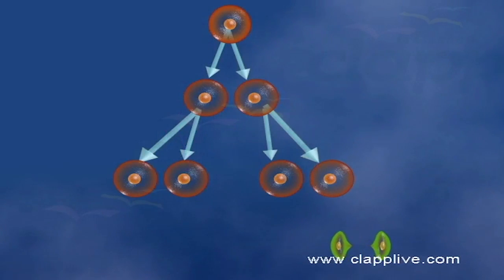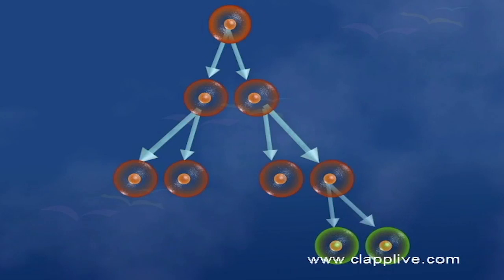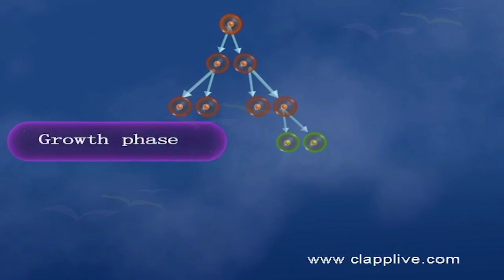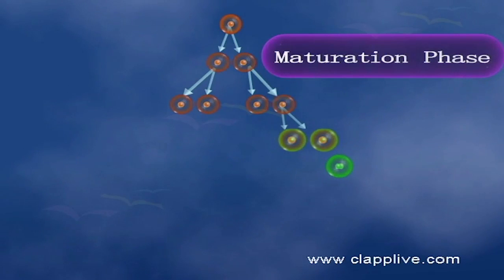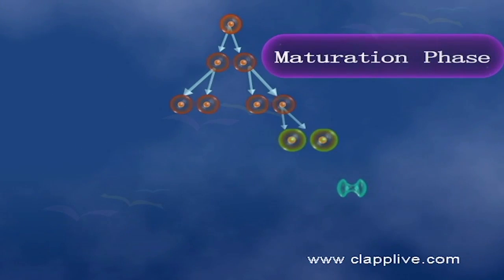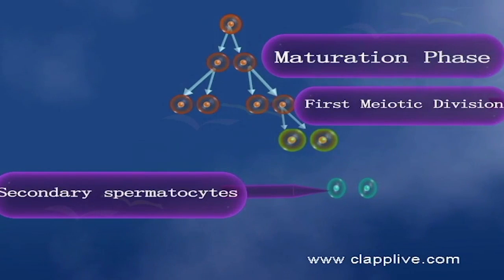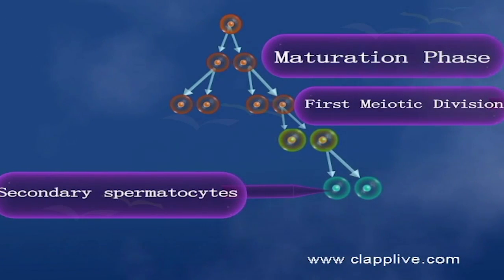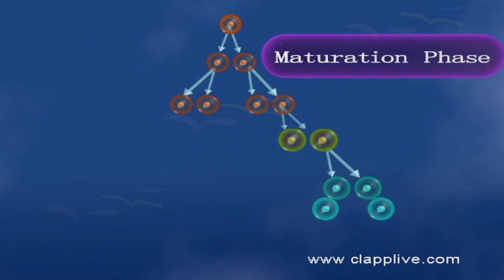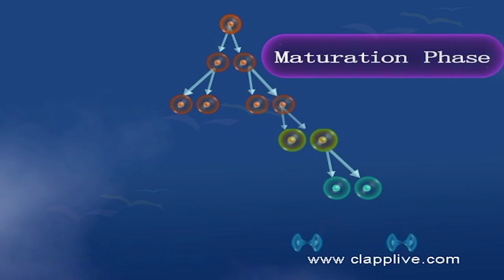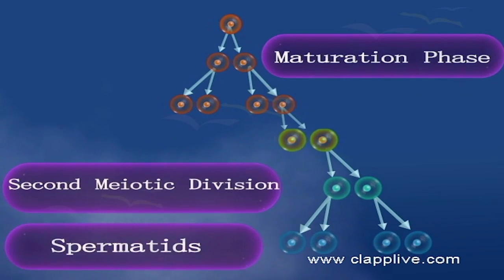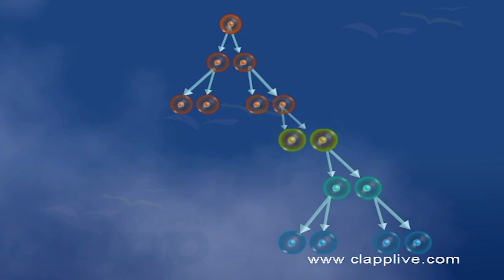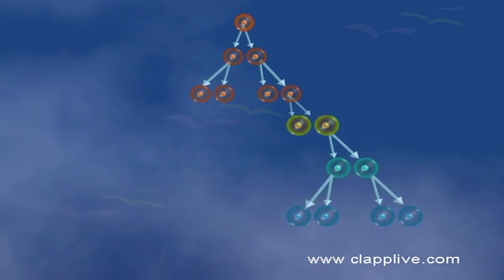The next is the growth phase, in which each diploid primary spermatocyte enlarges and prepares for meiotic division. The third phase is the maturation phase, where each diploid primary spermatocyte undergoes meiosis. This consists of two divisions. During the first meiotic division, each diploid primary spermatocyte produces two haploid secondary spermatocytes. The second meiotic division is an equational division; each secondary spermatocyte produces two haploid spermatids. As a result, four equal-size spermatids are formed from two secondary spermatocytes.